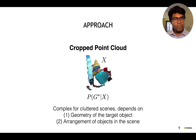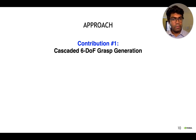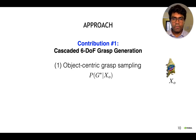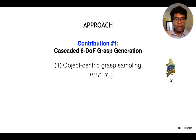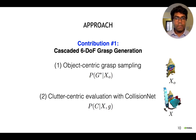To make this learning more tractable, we've presented our key contribution: a cascaded 6DOF grasp generation approach. We've factorized this into two steps. The first is object-centric grasp sampling, and because we have instance segmentation, we can get the point cloud corresponding to just the target object. The second step is clutter-centric evaluation with Collision Net. We also show later that this cascaded approach and factorization works much better.